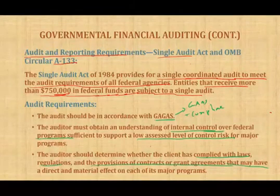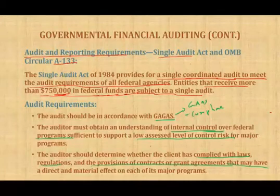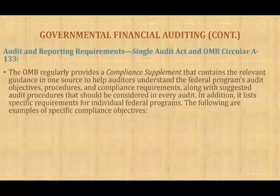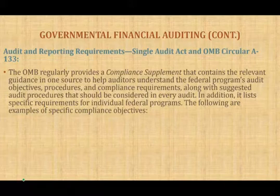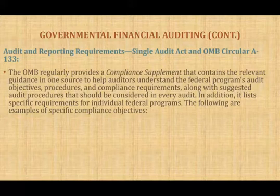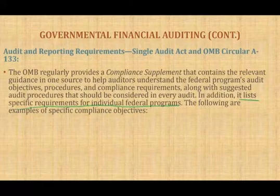The auditor must issue a report to the federal government confirming that the government entity is in compliance with laws and regulations for each major program. The Office of Management and Budget, on a regular basis, provides a compliance supplement containing relevant guidance in one source to help auditors understand federal programs' audit objectives, procedures, and compliance requirements. It also lists specific requirements for individual federal programs.